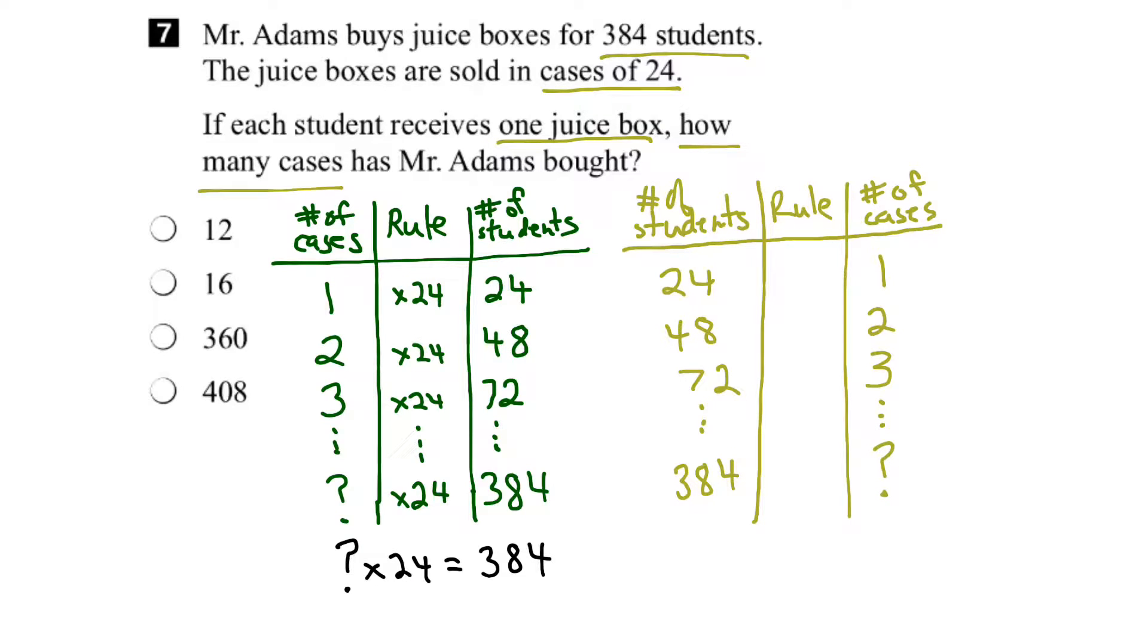Well, let's find the relationship here. Let's find that rule. How did I get from 24 to 1? Well, in this case, I divided by 24. From 48 to 2, same thing. Divide by 24. 72 to 3, divide by 24. So, that rule applies all the way down. And in this case, if we started with 384 students, divided by 24, that would equal the number of cases that we need.